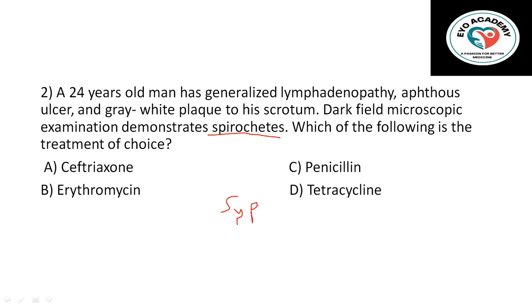The diagnosis is syphilis. We go for syphilis because this age is the age of sexually transmitted infections — STIs are more common in this age group. There is a lesion on the genitalia, and most importantly, the microscopic finding shows spirochetes. The group of spirochetes includes spiral-shaped bacteria: Borrelia, Leptospira, and Treponema.